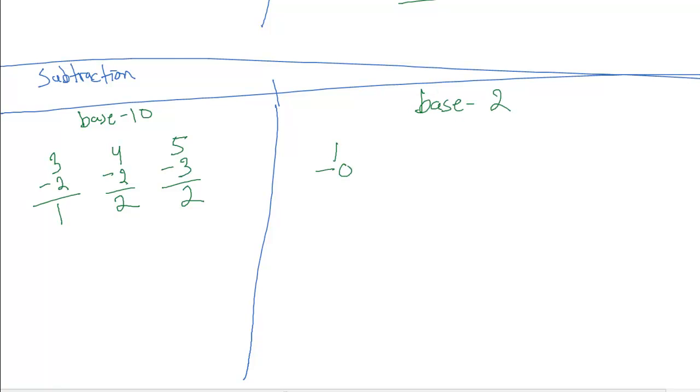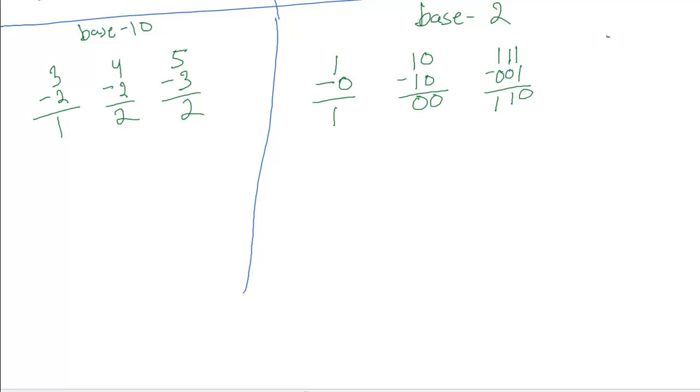So let's go ahead and do some simple binary or base 2 subtraction examples. So we'll do 1 minus 0, which is just 1. How about 1, 0 minus 1, 0. So we end up with 0, and then 1 minus 1 is 0. Or how about 1, 1, 1 minus 0, 0, 1, and you can see it's 0, 1, 1. So for our final example, we're going to do something a bit harder.